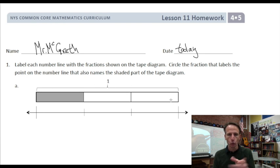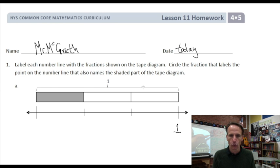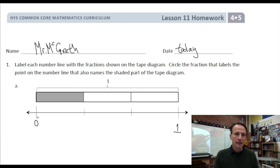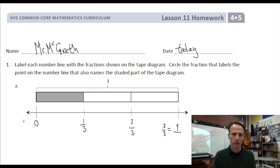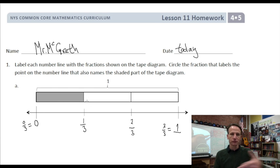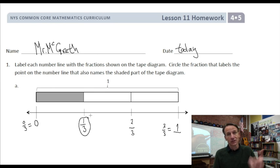We can see this whole tape is one whole, so that means the end of the tape, the end of the number line, is one. The other end is zero. Now, what are we talking about here? We're talking about thirds — one, two, three. We have thirds. So starting from zero, this would be one-third, and this point here would be two-thirds. That's three-thirds at the end, and zero-thirds, also known as zero, at the start. What is the fraction? It's one-third — so we just circle one-third. That's it.